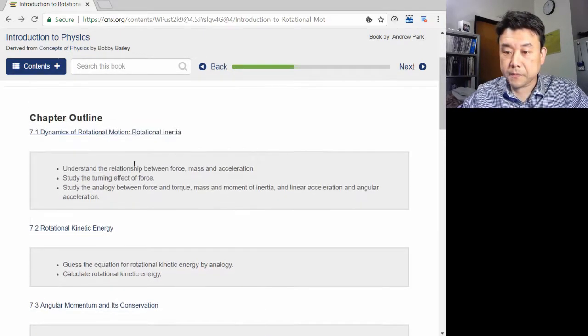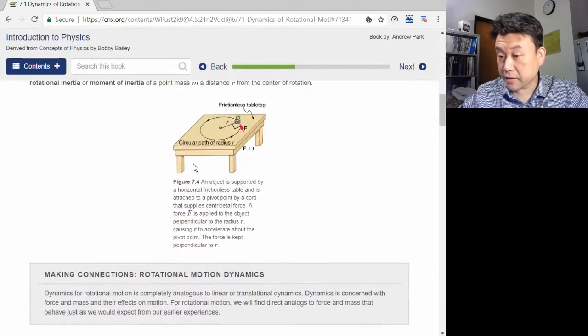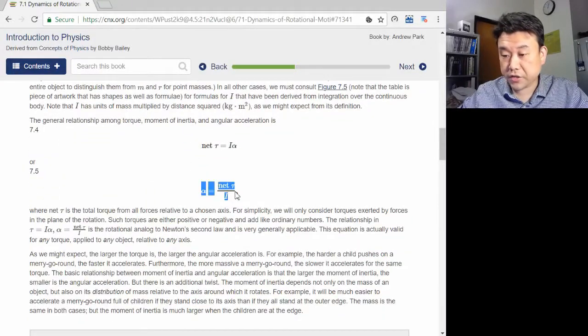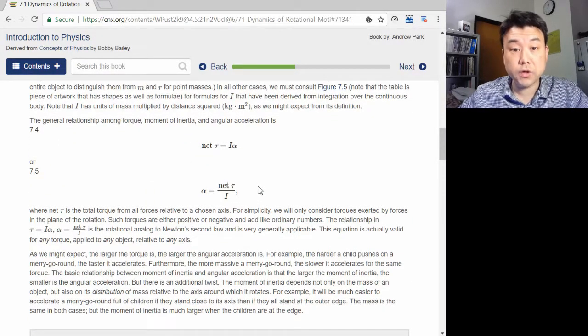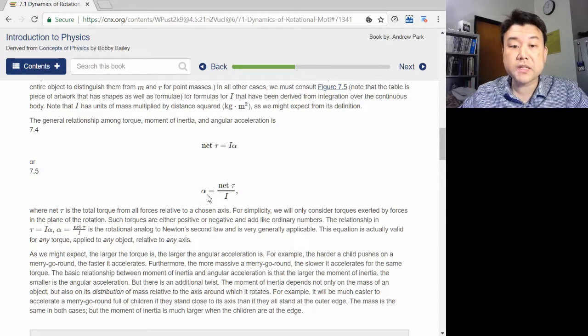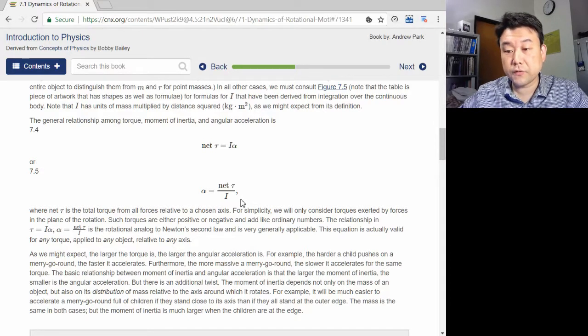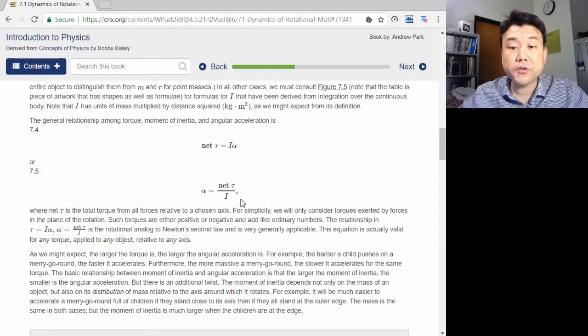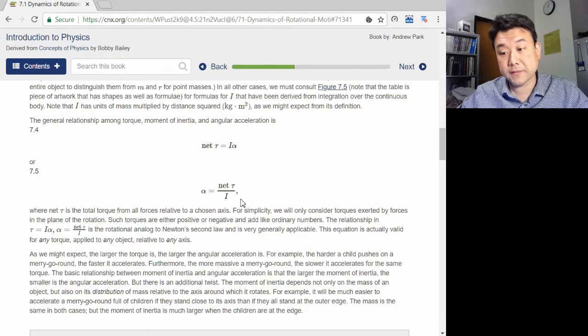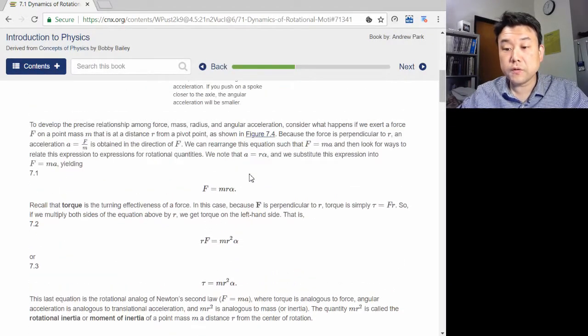So for example, angular acceleration is given by net torque divided by rotational inertia. This is the rotational version of Newton's second law, which says acceleration is given by net force divided by mass. So this rather complicated concept of rotational inertia can be understood better if you think of it like a rotational version of mass. And torque is the rotational version of force.